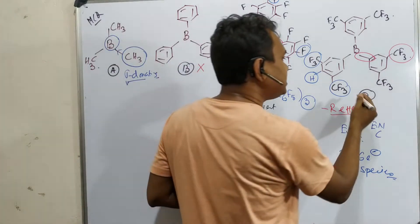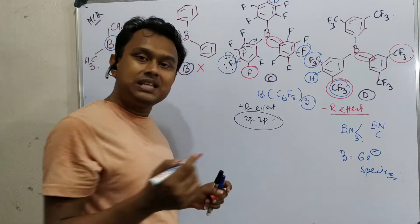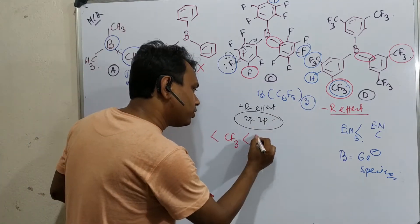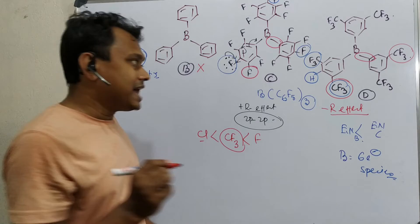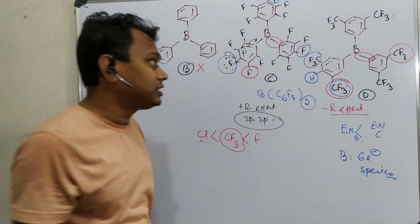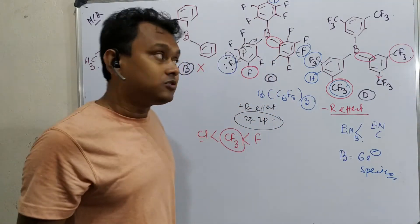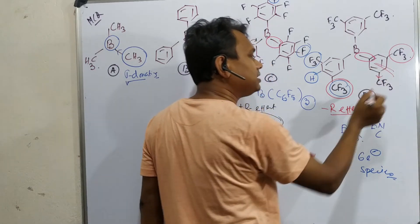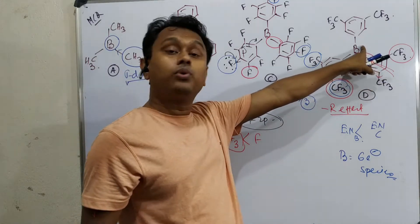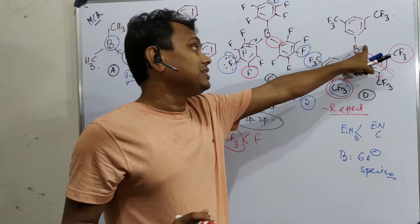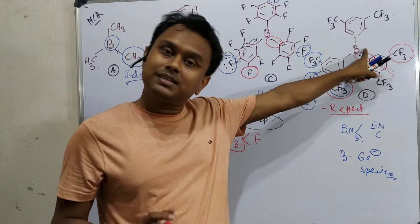In option D there is a minus R effect of this CF3 group. It is considered that the CF3 group's electronegativity is in between fluorine and chlorine. So this is actually very high electron withdrawing and there is no plus R effect. So it will only withdraw electron density through the sigma bond. Consequently, it will reduce electron density from this phenyl, so this phenyl will not donate electron density to this boron center. That's why this is one of the most Lewis acidic boron centers reported.